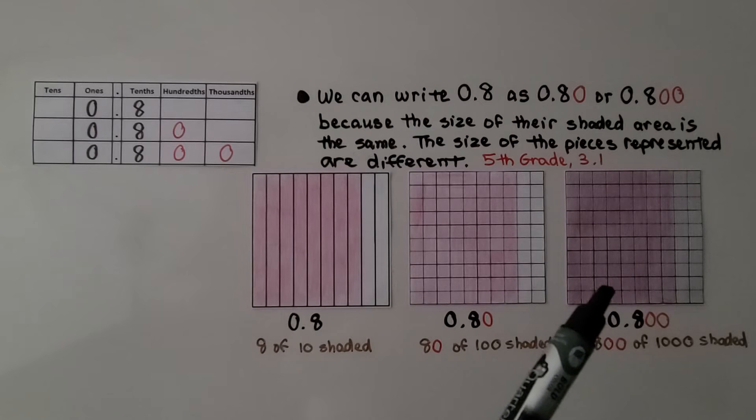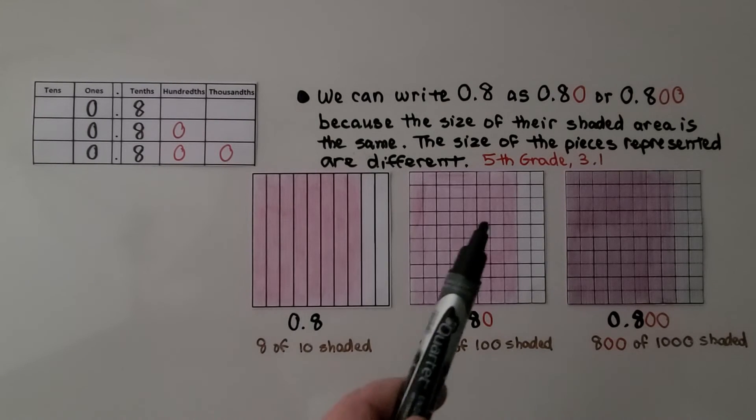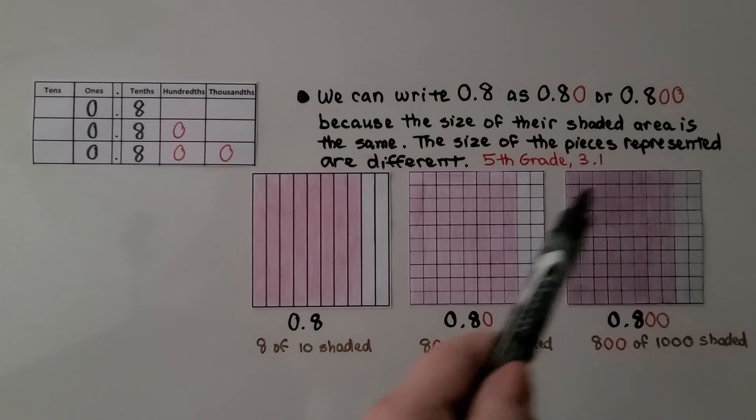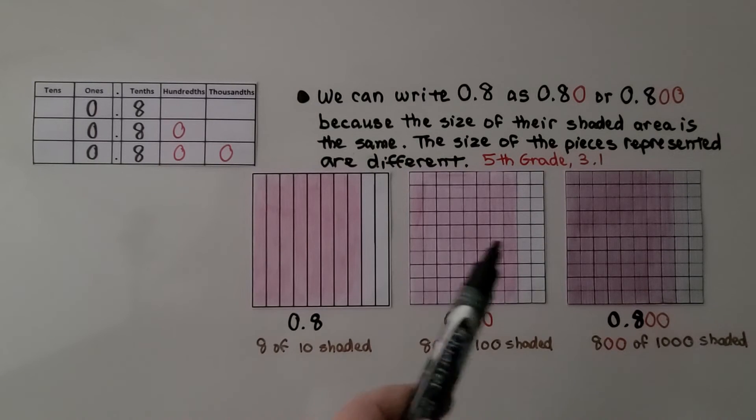And here, each hundredth is split into 10 little pieces. So this represents 800 thousandths. Each square is the same size. Each big square and the same amount is shaded pink. They all represent the same amount of area.